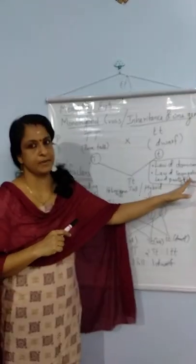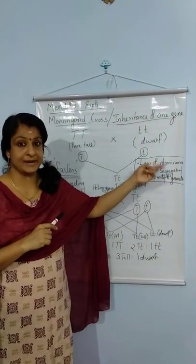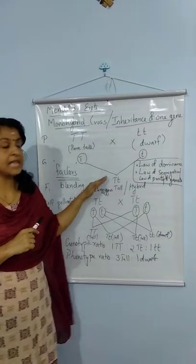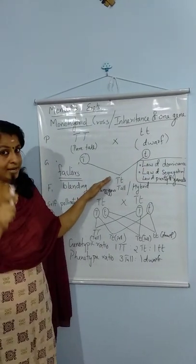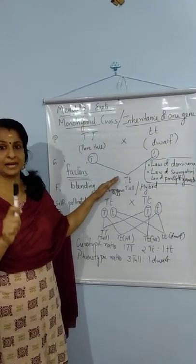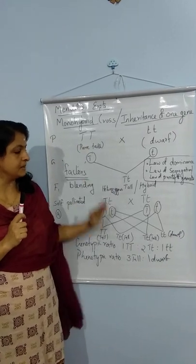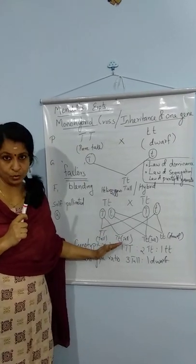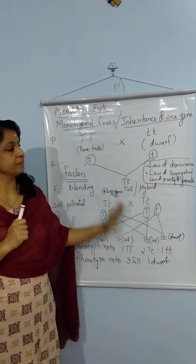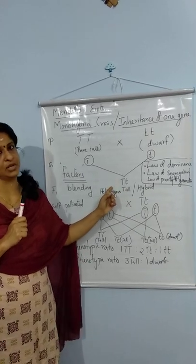To summarize the Law of Dominance: when two parents with contrasting characters are crossed, in the F1 only one character will be shown — that is the dominant character. The character which appears in F2 is the recessive character, and it remains hidden in the F1 generation.